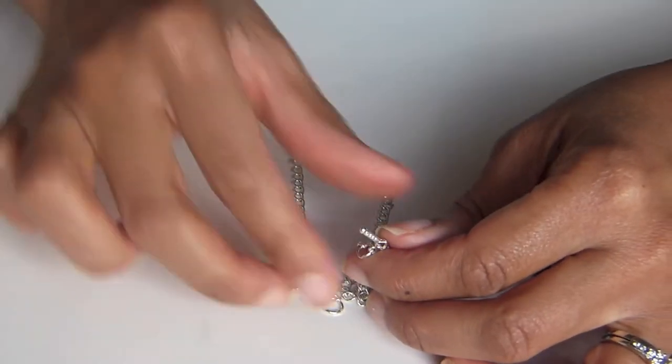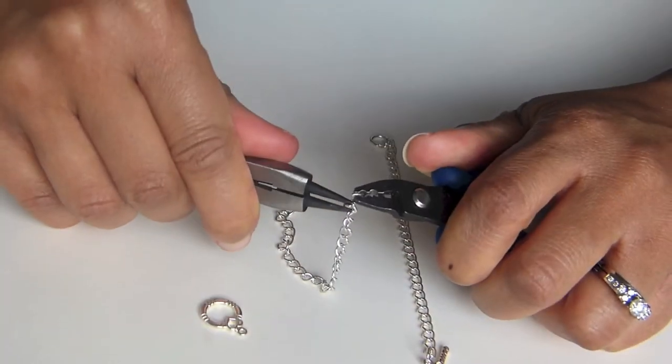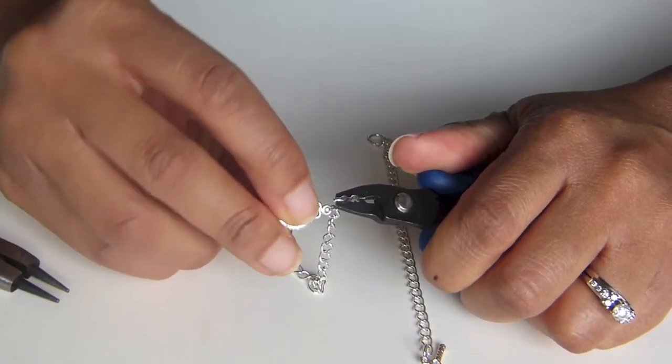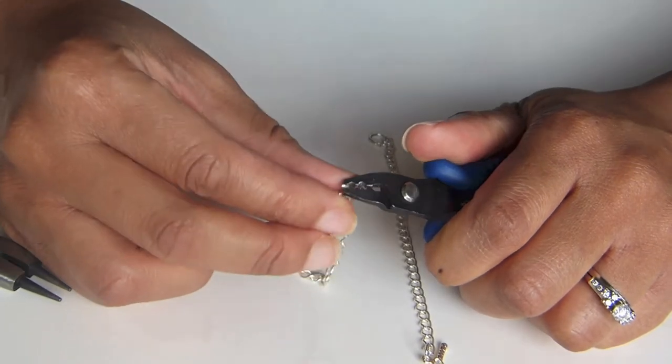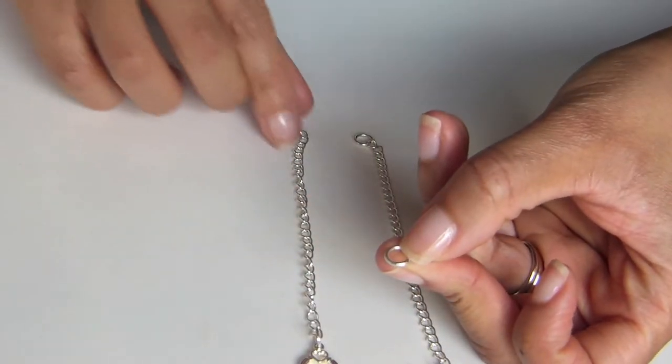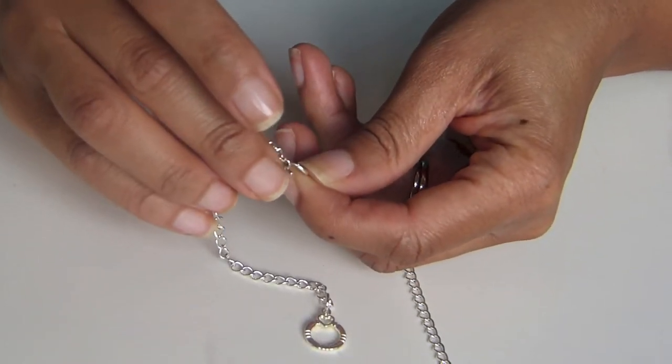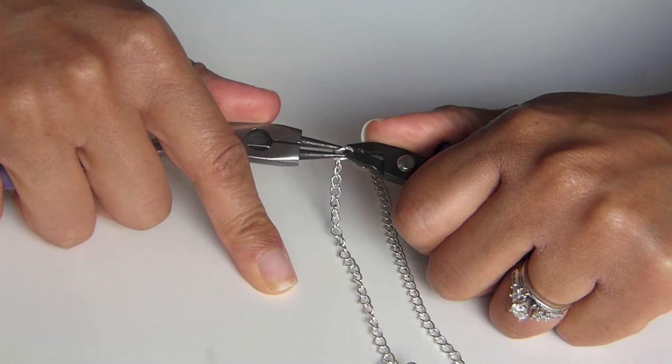Now you're going to repeat this on the other side. Open the jump ring and add the other part of the closure. Now this larger jump ring is going to be at the bottom because this is where we're going to be beading up to this point. You're going to do this on both sides.